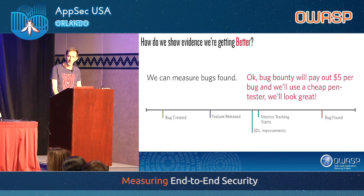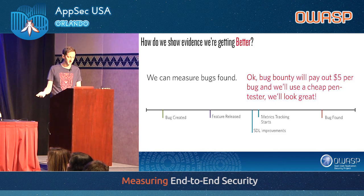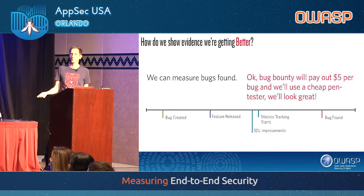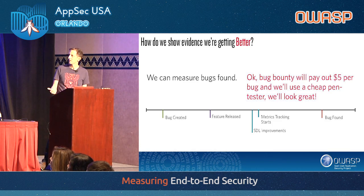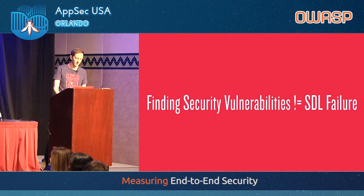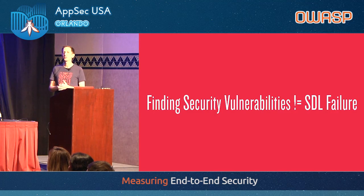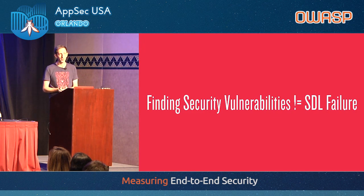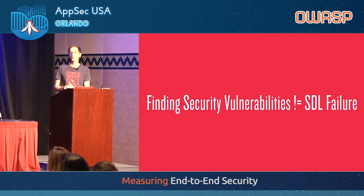The argument is: we can measure bugs found, but I could just change the bug bounty to pay out five dollars per bug and hire a cheap pen tester — I'd have no bugs found and it'd look great. The issue is I don't want a situation where a bug created two years ago, after I add my SDL improvement and start tracking metrics, suddenly makes my metrics look bad. The concept here is: finding security vulnerabilities is not equal to a failure in our SDL. We have to decide what actually constitutes a failure in our SDL.